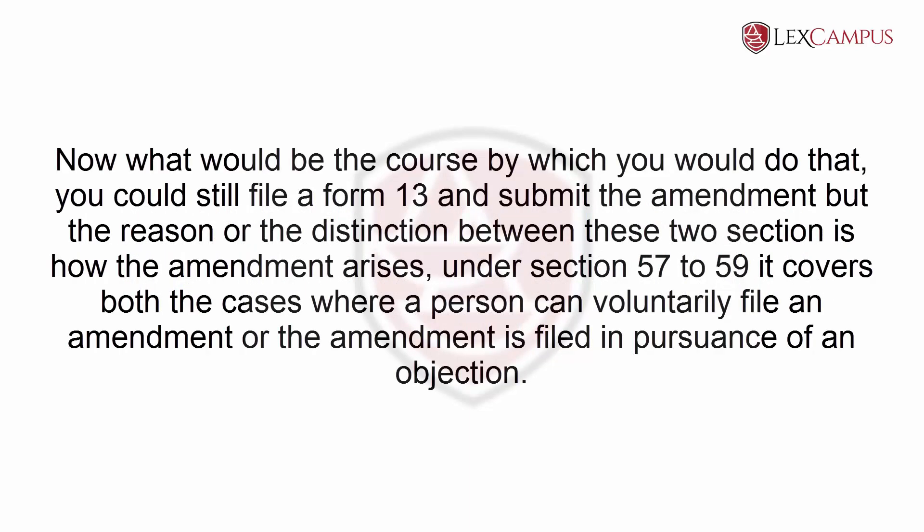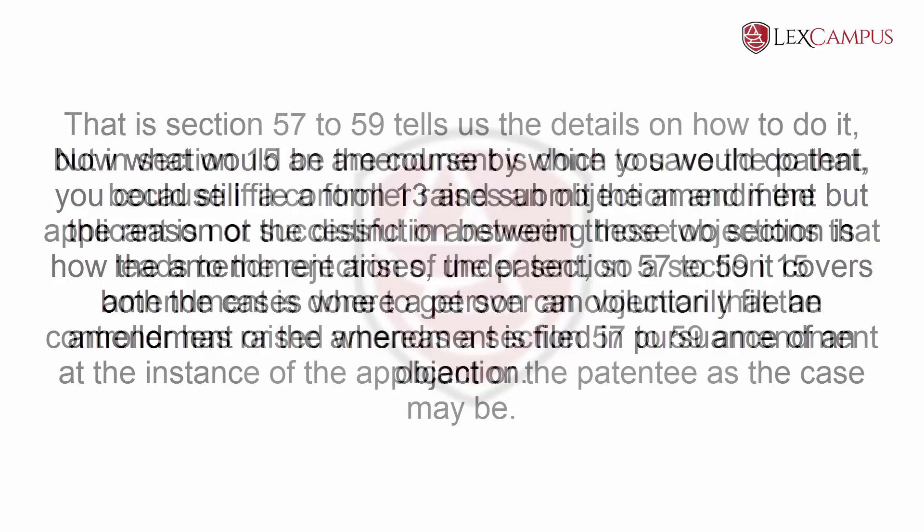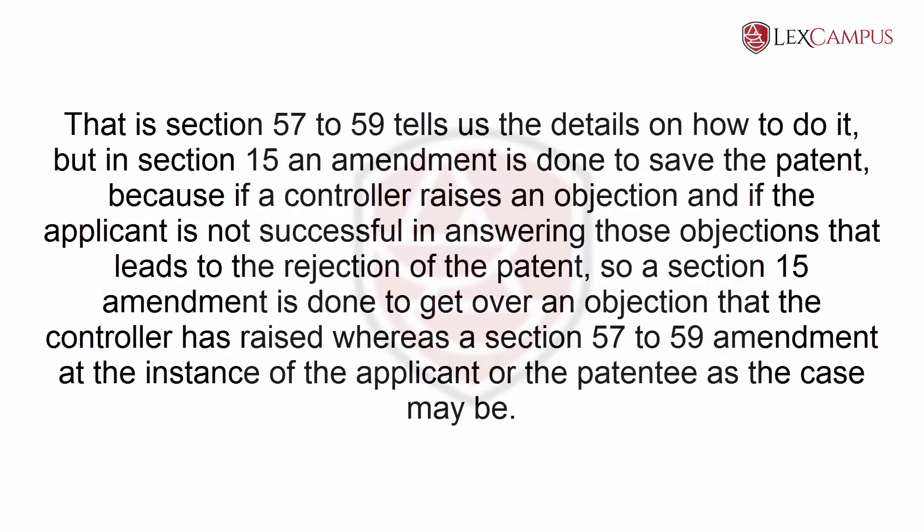To get over the controller's objections, you would still file a Form 13 and submit the amendment. But the distinction between these two sections is how the amendment arises. Under Sections 57 to 59, it covers both cases where a person can voluntarily file an amendment or where the amendment is filed in pursuance of an objection. Sections 57 to 59 tell us the details on how to do it.